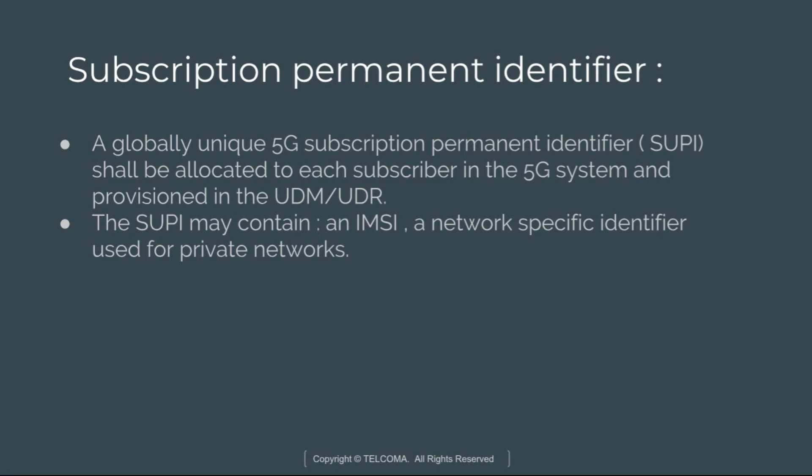The SUPI may contain an IMSI number, or a network-specific identifier which is used for private networks. A SUPI containing a network-specific identifier shall take the form of a Network Access Identifier (NAI). Whenever the UE needs to indicate its SUPI to the network, the UE provides the SUPI in concealed form.